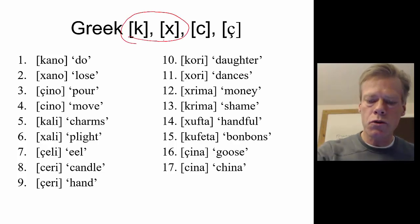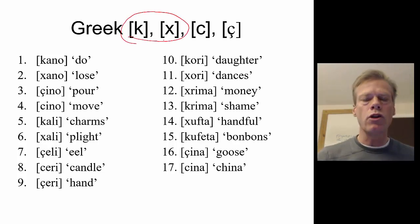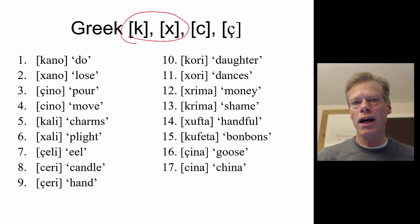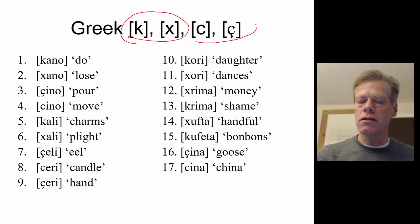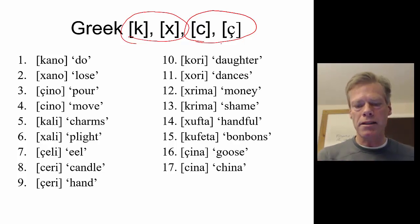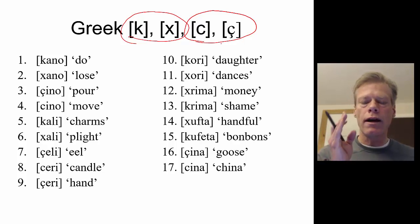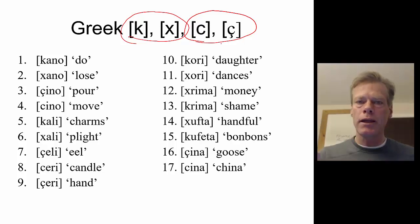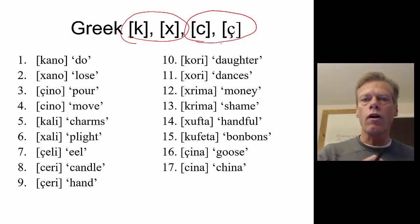The first two sounds we're looking at are velars: the velar stop and the velar fricative. The next two are palatals: the palatal stop and the palatal fricative. The first question we want to ask is whether the stops are in complementary distribution with the fricatives or in contrastive distribution.